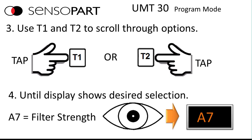Then once you're in advanced program mode you tap T1 or T2 to scroll through the options. It'll say A1, tap T2 it'll say A2 and so on. We want to go to A7 filter strength. So keep tapping the teach buttons until the display says A7.